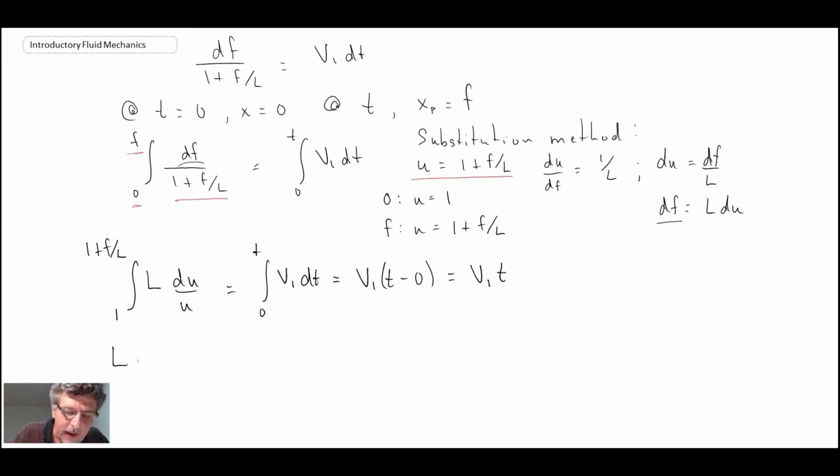But what we get is we get l multiplied by du over u and that is evaluated in the limits from 1 to 1 plus f over l, which we can then re-express as being l times ln of 1 plus f over l minus ln of 1. And if you check, ln of 1 turns out to be 0. And that will be equal to v1 t on the right-hand side. Finally, what we're left with is l natural logarithm of 1 plus f over l equals v1 t.